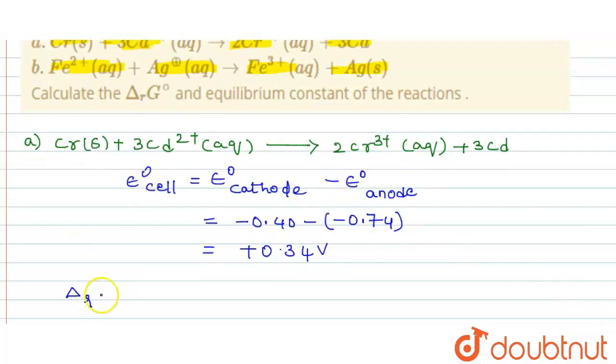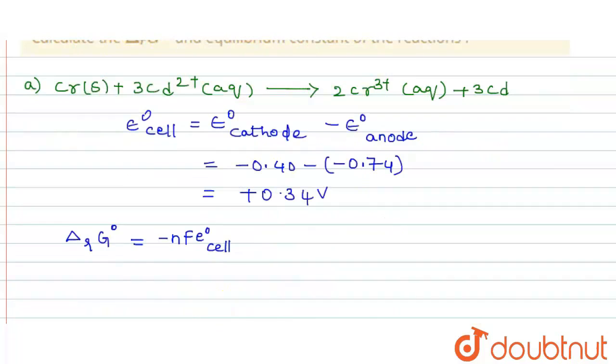Now, we have to find ΔrG°. The formula for this is minus nFE° cell. And we get here the value of n. Here we have 2 moles of chromium and 3 loss of ions. n is equal to plus 3 into 2 moles of chromium, so 2. We get the value of n is equal to 6.